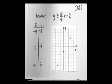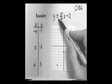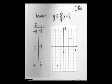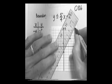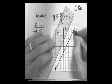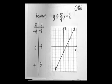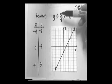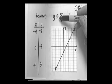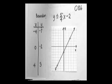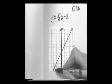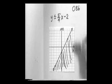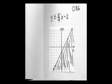The boundary line is for less than or equal to. Since equal is included, we draw a solid line. For y is less than or equal to the expression, we get the lesser values of y, which are the values going down. That means we'll shade below the boundary line.